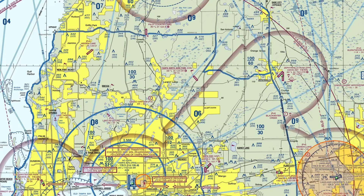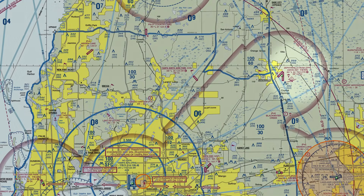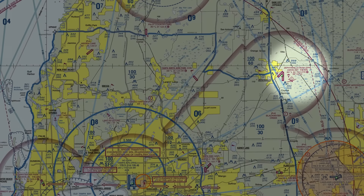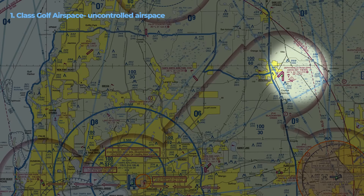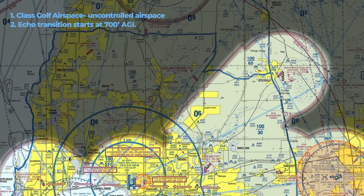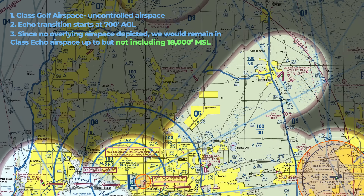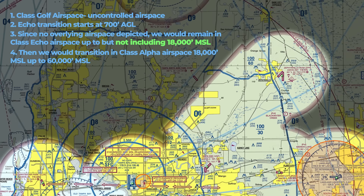Let's take a quick example. If we're on the ground at an uncontrolled airport in Class Golf — called Zephyr Hills — imagine a rocket takes off straight up. When departing the airport it would start in uncontrolled Class Golf airspace up to 700 feet. We can see the shaded magenta ring indicating that Echo transition, so starting at 700 feet we're entering Class Echo airspace. Since there's no overlying airspace depicted, that rocket would remain in Class Echo airspace up to but not including 18,000 feet MSL.